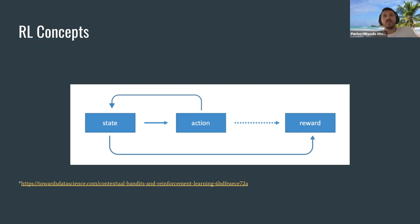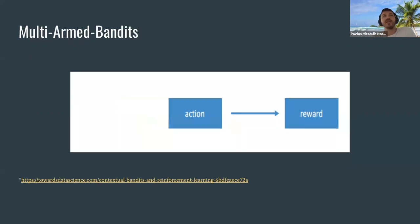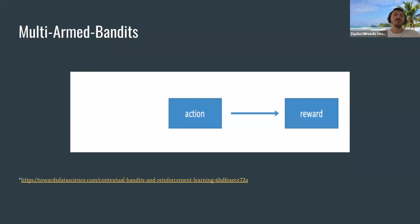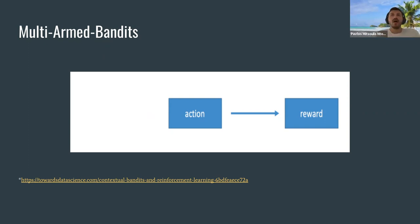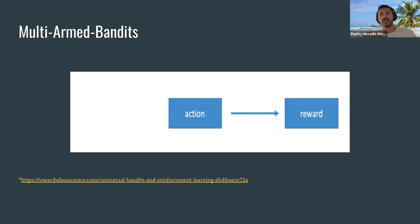That delayed reward makes RL quite hard to use in real-world e-commerce applications. Something that works, and that I've seen working, is multi-armed bandits, where you can relax some of those constraints. You can have context-free multi-armed bandits — I'll talk about contextual ones later. Essentially you don't need any state.